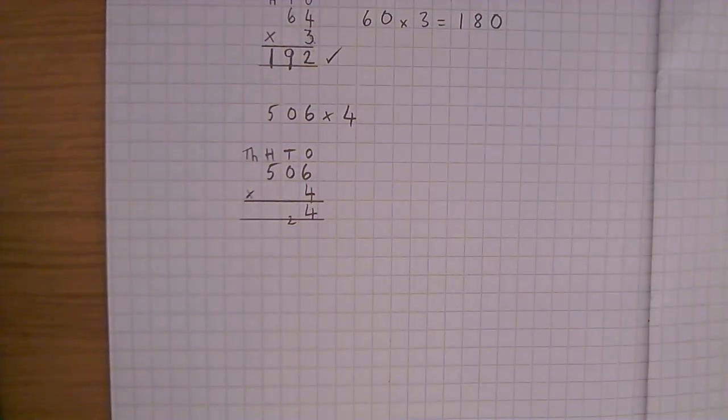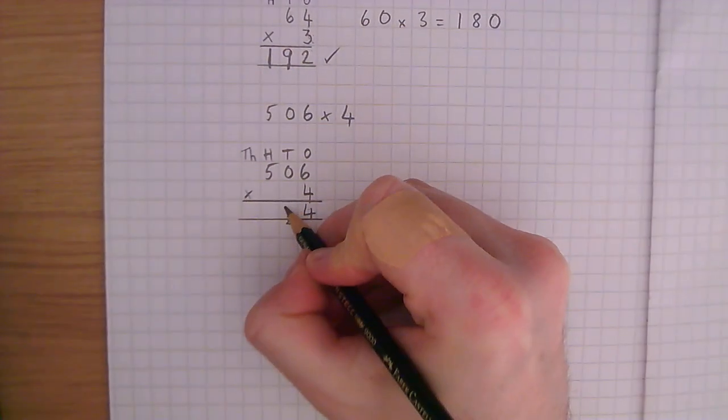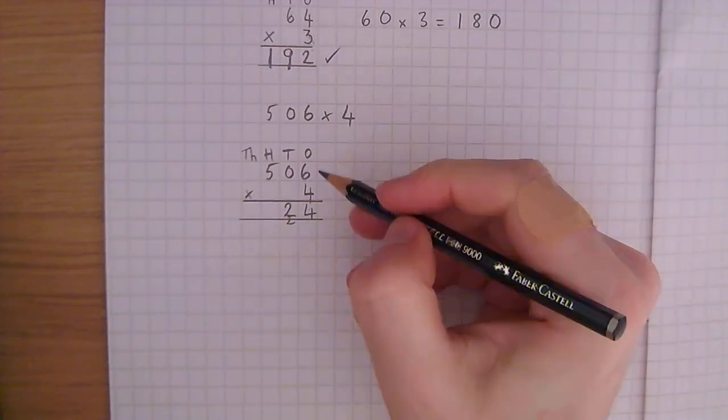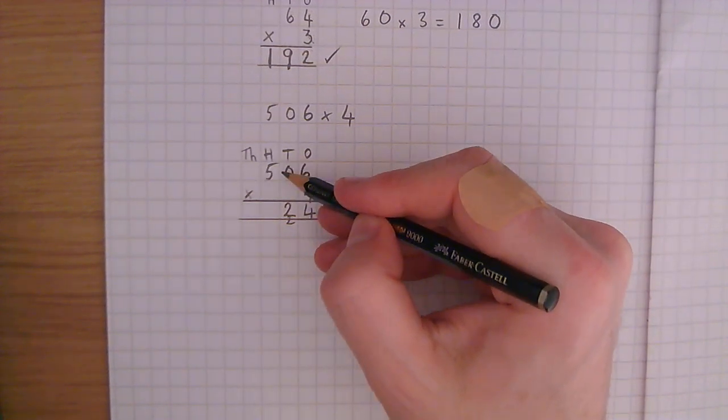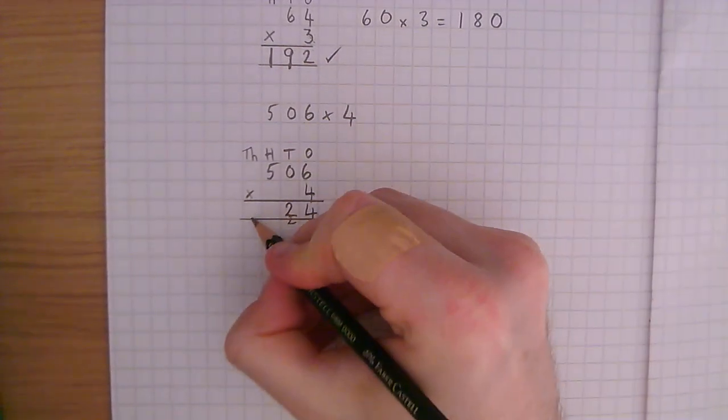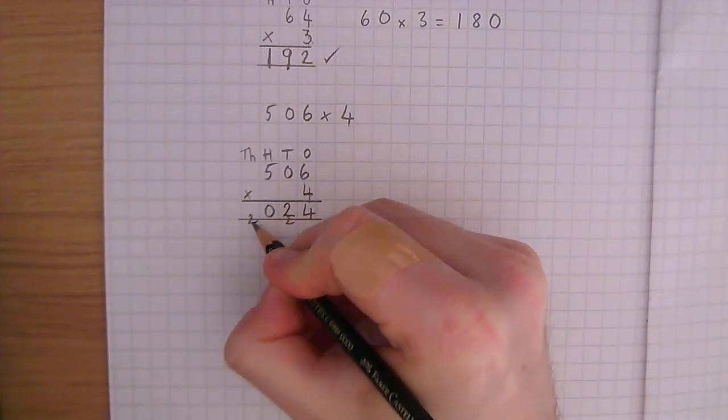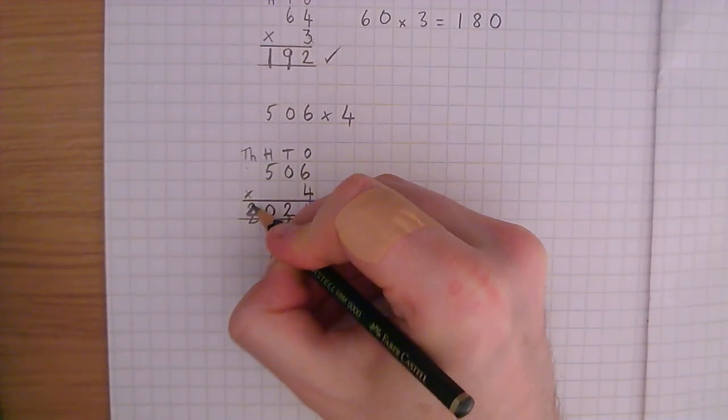4 times 0 is 0. Any number multiplied by 0 is 0. Add this 2. 4 times 5. A little reminder that it's really 4 times 500s. But for the method we can say 4 times 5. 4 times 5 is 20. There's our 20. And then there's nothing left to multiply 4 by. So that 2 just goes there.